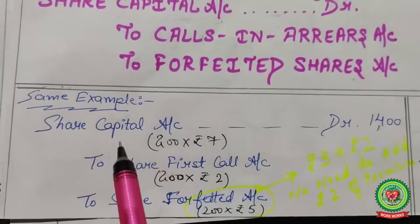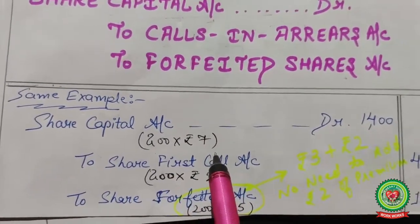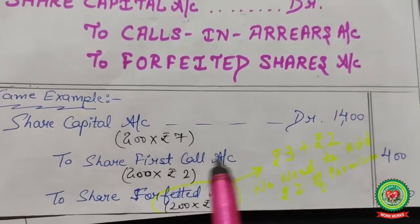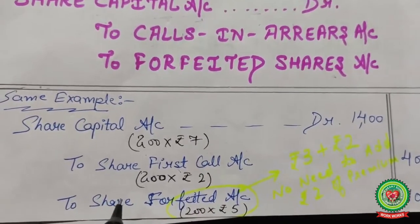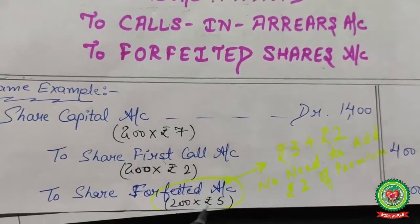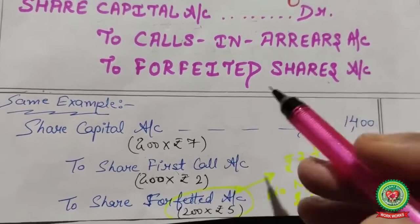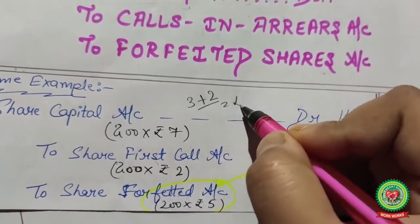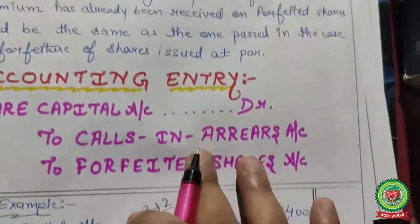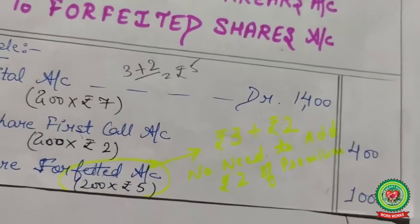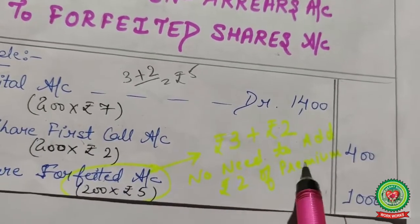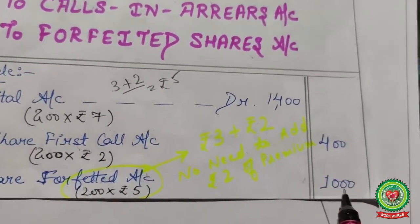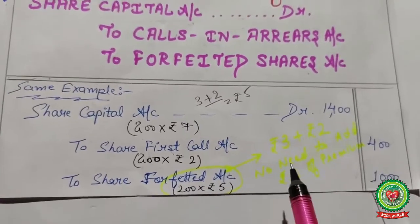Applying to Binder: 200 shares — Share Capital Account Dr. 200 × 7 = 1400; to Share First Call Account 200 × 2 = 400; to Share Forfeited Account 200 × 5 = 1000. The forfeited account amount is rupees 5 — that is rupees 3 application plus rupees 2 allotment — total rupees 5. No need to include the rupees 2 premium because it was already settled in a separate security premium reserve account.